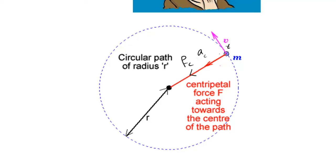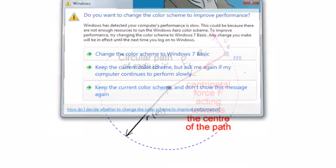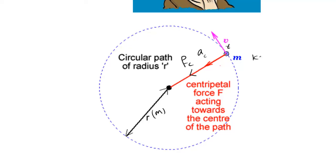These are the physical quantities needed in circular motion. We must not forget the radius, which is the radius of the circular path in meters. Mass is in kilograms, velocity is in meters per second, acceleration is in meters per second squared, and force is in newtons.